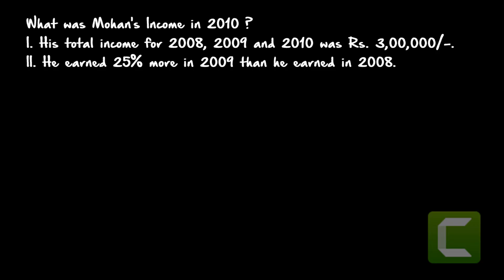Hi friends, welcome to today's video. Today we are going to deal with data sufficiency questions based on percentage. The first question is: what was Mohan's income in 2010? The first statement given is his total income for 2008, 2009, and 2010 was rupees 3 lakh. The second statement is he earned 25% more in 2009 than he earned in 2008.